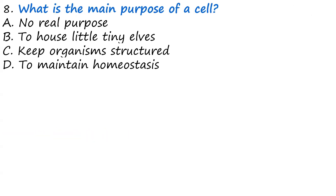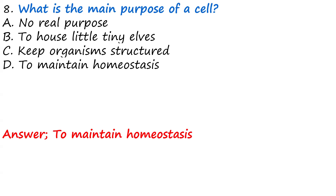Question eight: What is the main purpose of a cell? A, no real purpose. B, to house little tiny elves. C, keep organisms' structure. D, to maintain homeostasis. The major function of the cell is to maintain homeostasis — that is, to regulate the internal environment. Each cell works in an organized way in order to maintain the homeostasis conditions of the body. The answer is D, to maintain homeostasis.